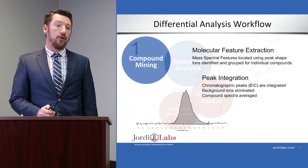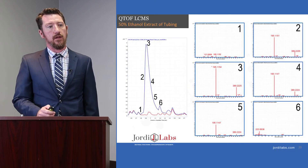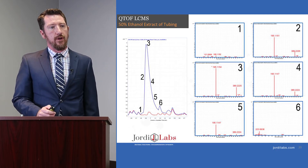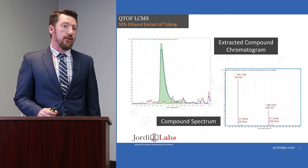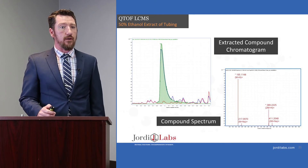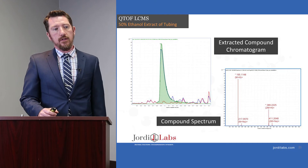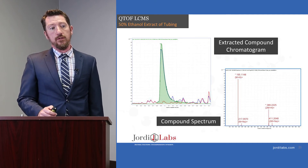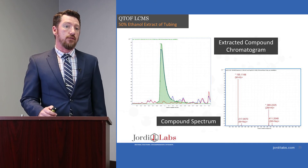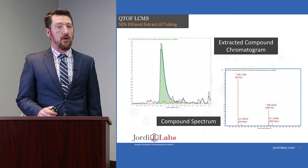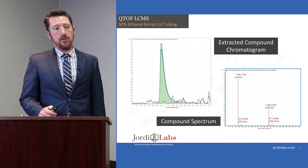Looking at one peak sent through the molecular feature extraction algorithm, we can see the green integrated peak representing the major component. The compound spectrum shows that all extraneous ions have been removed, and we've isolated four different ions all related to a single compound: the M plus proton and M plus sodium adducts, as well as the 2M plus proton and 2M plus sodium adducts. If we were to do this manually, it may be very easy to miss the fact that those higher mass ions are related to the lower mass ones.